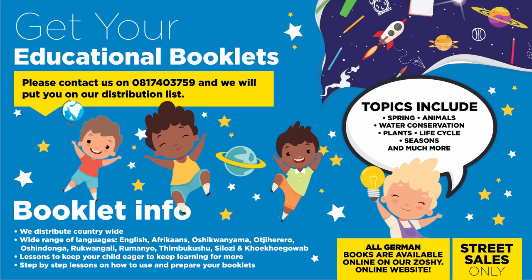Do you have children in the age range of five to six years and want to participate in our school booklet program? Please contact us on 08174-3759 and we will put you on our distribution list for the attention of pre-primary schools. Topics include family, summer, culture, traditions and houses, transport and communications, occupations, autumn, and more. We distribute countrywide in over 10 different languages.